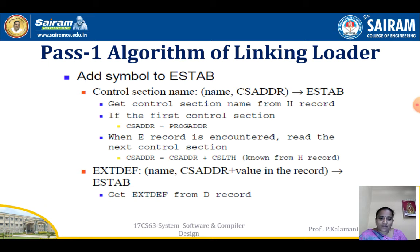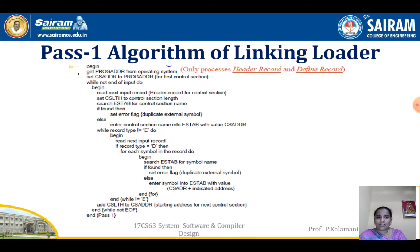The external definition is obtained from the defined record, because the defined record contains both references and external definitions. So the external symbol table gets its information from the defined record. Now we will see the algorithm. The program load address is obtained from the operating system, and initially the program load address is assigned to the control section address — both are the same.